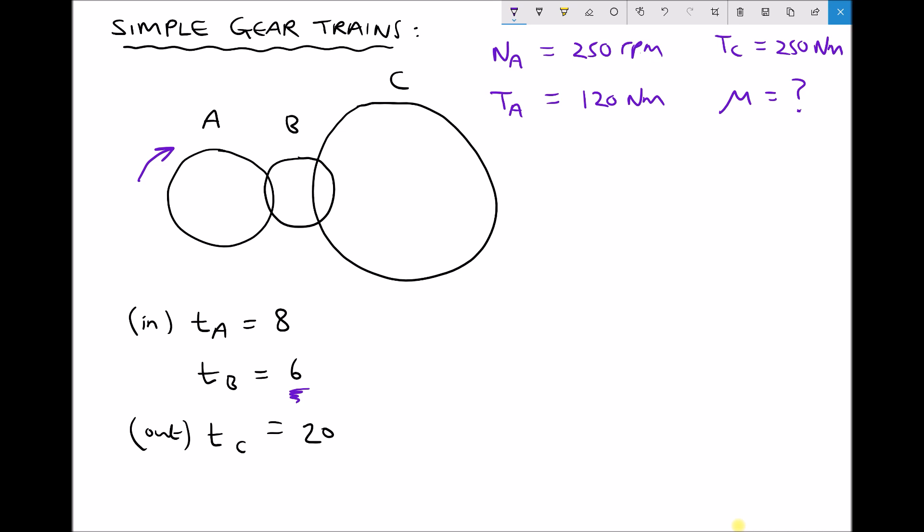All that idler gear does is change the direction of gear C. If you recall last time we had two gears, the input was rotating clockwise and the output was rotating anticlockwise. But in this case gear A drives gear B, so gear A turns clockwise and gear B turns anticlockwise.